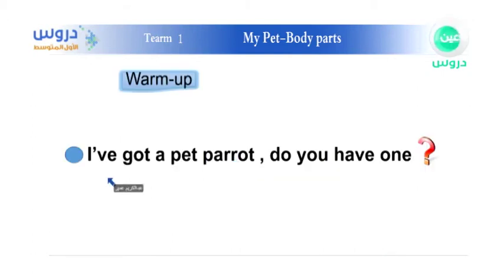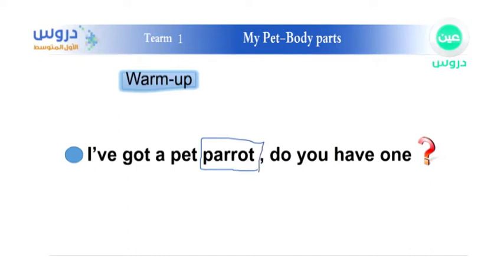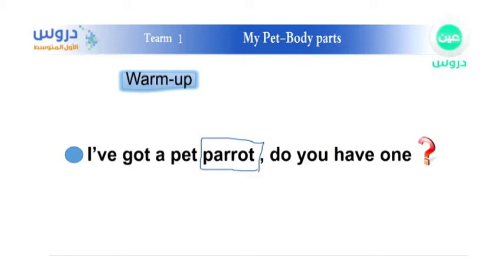To warm up: I've got a pet parrot. Who can tell me what a parrot is? Explain it in English — I don't want anyone to say it in Arabic. Try your best. It's a bird — p-i-r-d — it's an animal. Not a pirate. A pirate is a human; we're talking about an animal.